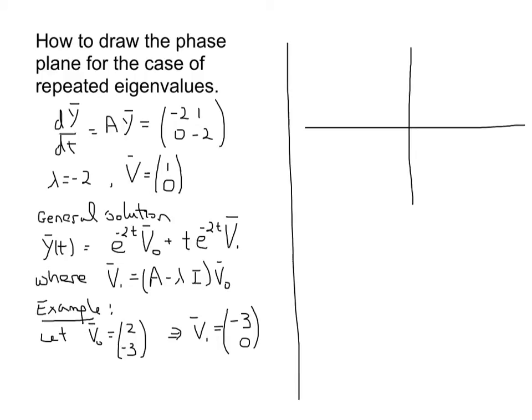So here's our example. Here's our system. We're looking for curves, functions x of t, y of t that satisfy this system where A is the matrix (-2, 1, 0, -2). Using the characteristic equation we find one repeated eigenvalue of -2, and here's its corresponding eigenvector V = (1, 0).